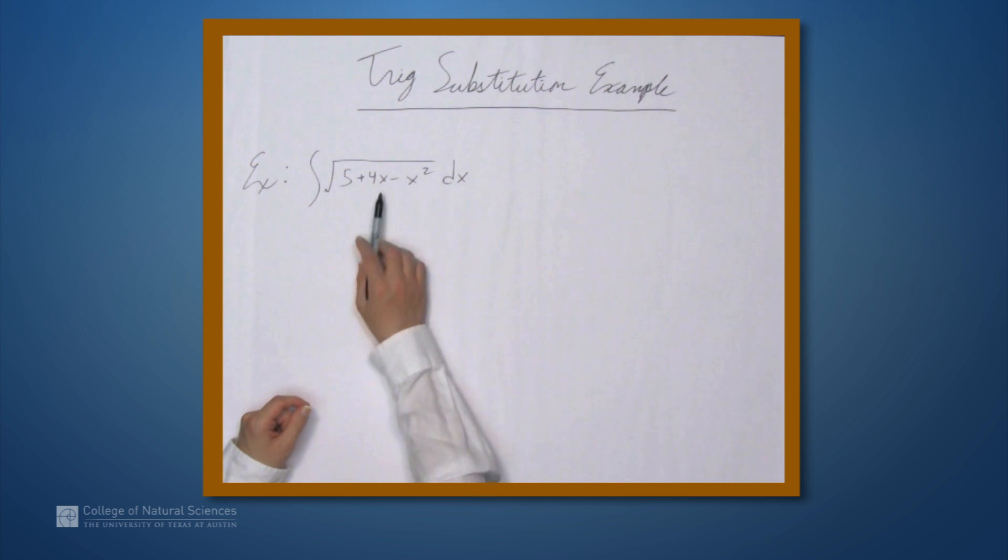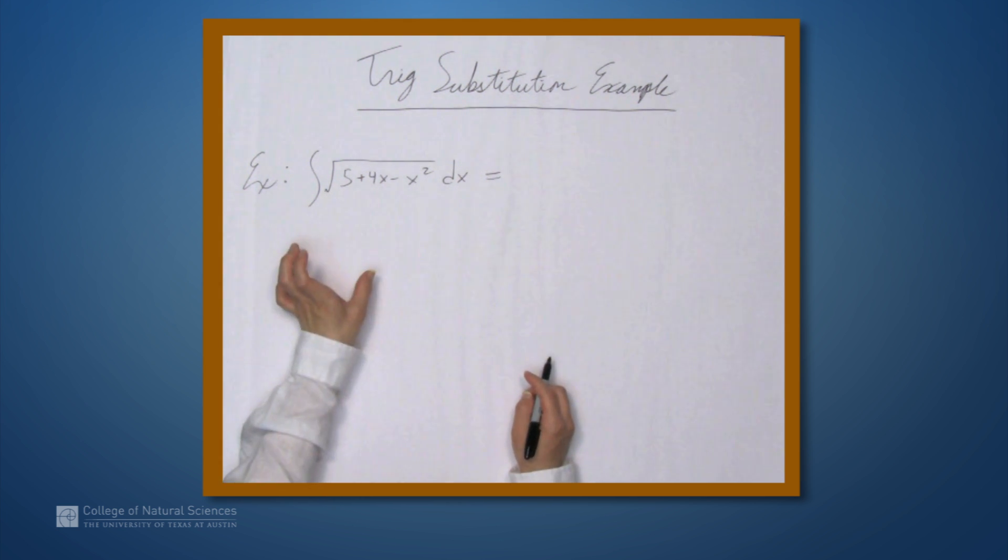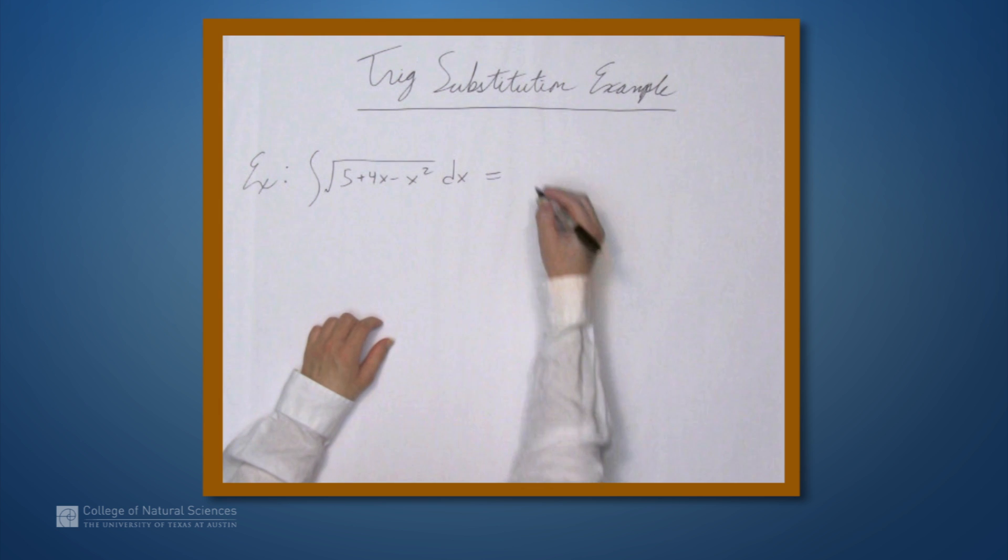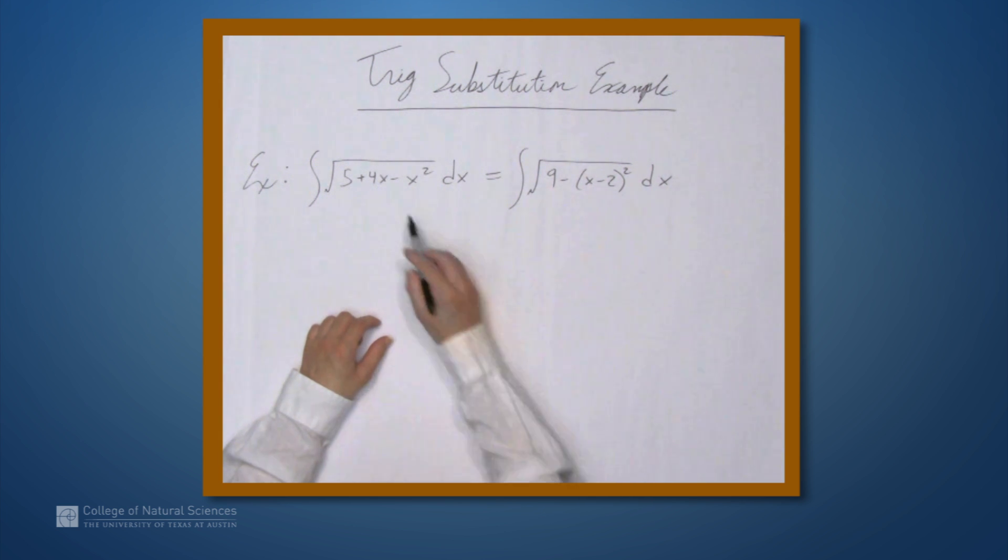So completing the square means that we can rewrite this thing as something squared, some quantity involving x squared plus a constant. And in this case, when we complete the square, we get 9 minus (x - 2) quantity squared. Now, this is something that you can easily verify that this expression under the square root is equal to this one. And if you're unsure how to find this, you should review completing the square.